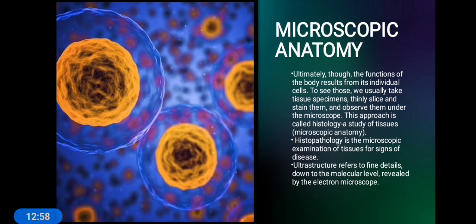Histopathology is the microscopic examination of tissues for signs of disease. 'Patho' means disease, 'histo' means tissue — so it is the study of diseased tissues. Ultrastructure refers to fine details down to the molecular level, revealed by the electron microscope. At this level you can also observe chemical reactions taking place in the body. With electronic microscopes providing very detailed, finer views, it becomes ultrastructure microscopic anatomy.